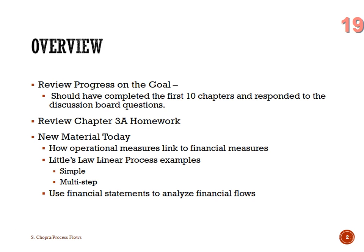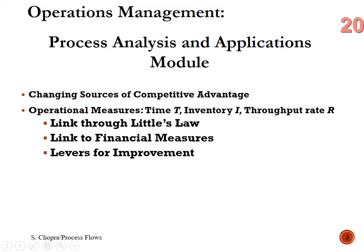We're also going to talk about how we use financial statements. In Chapter 3 we looked at the three measures — throughput, inventory, and flow time — and a variety of unit of measures: materials, customers, jobs, cash, accounts receivable. Today we're going to apply Little's Law to actual linear processes and look at how operations can help a company compete through changing sources of competitive advantage.